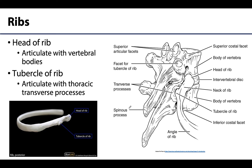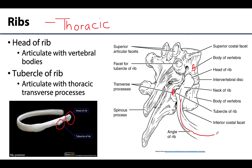The ribs also articulate with the vertebrae — specifically the thoracic vertebrae. Thoracic vertebrae have facets where the head and the tubercle of the ribs articulate. The head of a rib articulates with the body of the vertebra, while the tubercle — located a little distal on the rib — articulates with the transverse process. The rib then curves around and makes its way anteriorly via costal cartilages to articulate with the sternum.